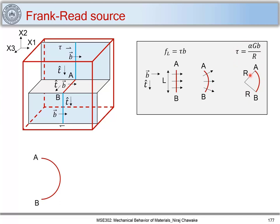When tau is further increased, the dislocation line segment bows in a semicircular fashion. The Burgers vector remains invariant pointing in one direction, and the radius of curvature decreases to r = l/2, since the distance between A and B is l. Substituting r = l/2 into the relation tau = αGb/r gives tau = 2αGb/l.